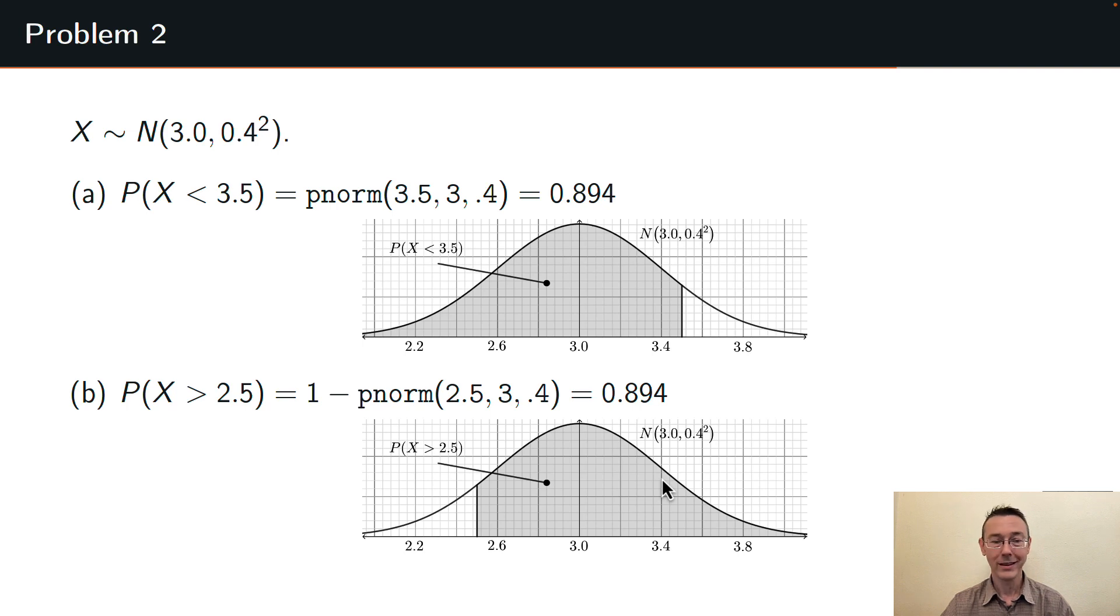Here's the picture that goes with it. You can see I've labeled 2.5 on my graph, shaded the area to the right, and then computed that area. The pnorm of 2.5, 3, 0.4 would be this unshaded area here in white. The total area under the entire graph is 1, so 1 minus that pnorm gives me the shaded area 0.894. If you look at the graphs from problem a and b, you can see that those shaded areas are actually identical. It's not a coincidence that these two problems both came out to give me areas of 0.894.